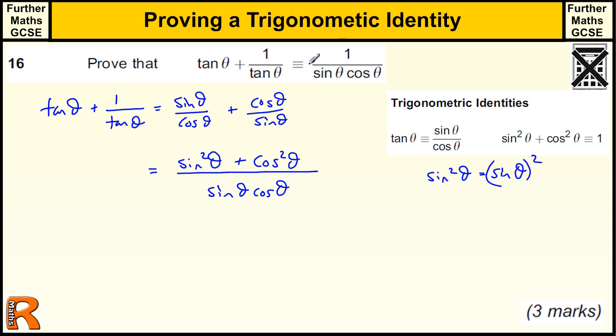So we're nearly there, we've got the bottom right. And then the top, we should really say, since sin squared θ plus cos squared θ equals 1.